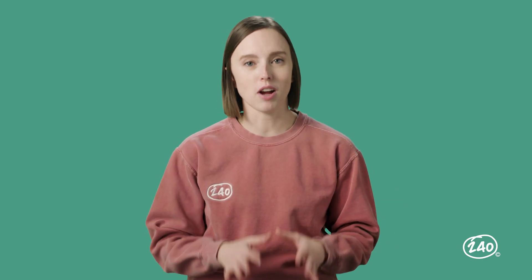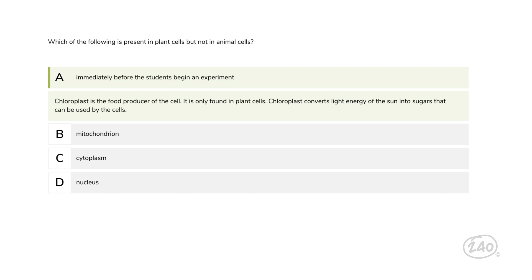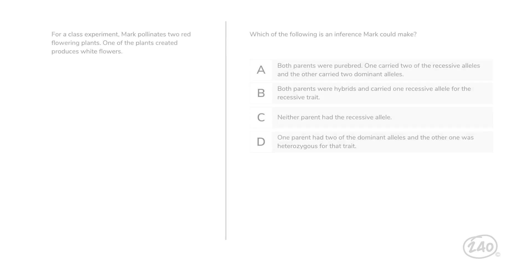Let's move on to domain two, cell structure and processes. Which of the following is present in plant cells but not in animal cells? Okay, remember those graphics we saw earlier? With those in mind, the correct answer has to be also A. Chloroplast is the food producer of the cell. It is only found in plant cells.